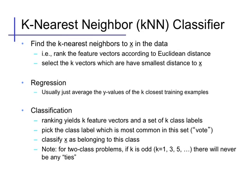For problems with only two classes, like binary classification problems, if we choose k to be odd, then there will never be any ties. Otherwise, we can choose a somewhat arbitrary tie-breaking technique.